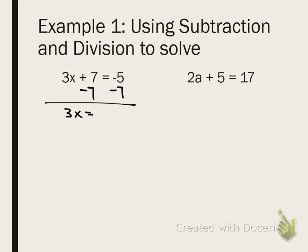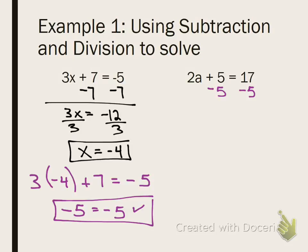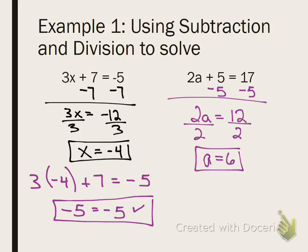Alright, so we subtract 5 from both sides. 2a equals 12. Divide both sides. a equals 6. Who got it right? a equals 6. Awesome. Good job. Alright, example 2.